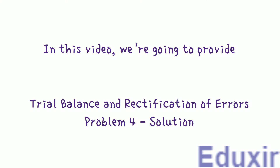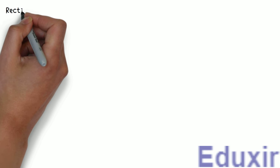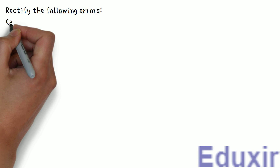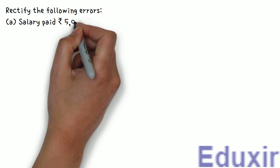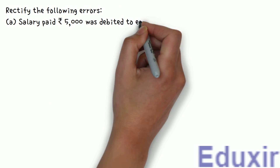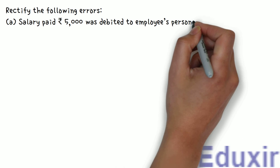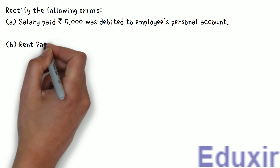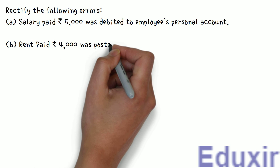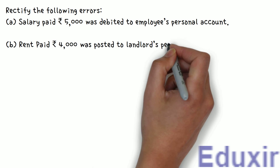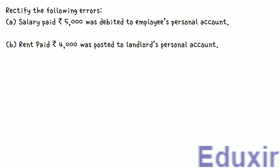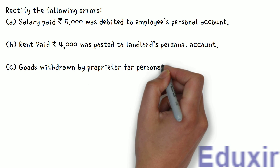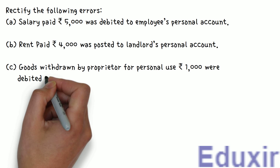The problem statement is as follows. Rectify the following errors. A: Salary paid Rs. 5,000 was debited to employees' personal account. B: Rent paid Rs. 4,000 was posted to landlord's personal account. C: Goods withdrawn by proprietor for personal use, Rs. 1,000 were debited to sundry expenses account.